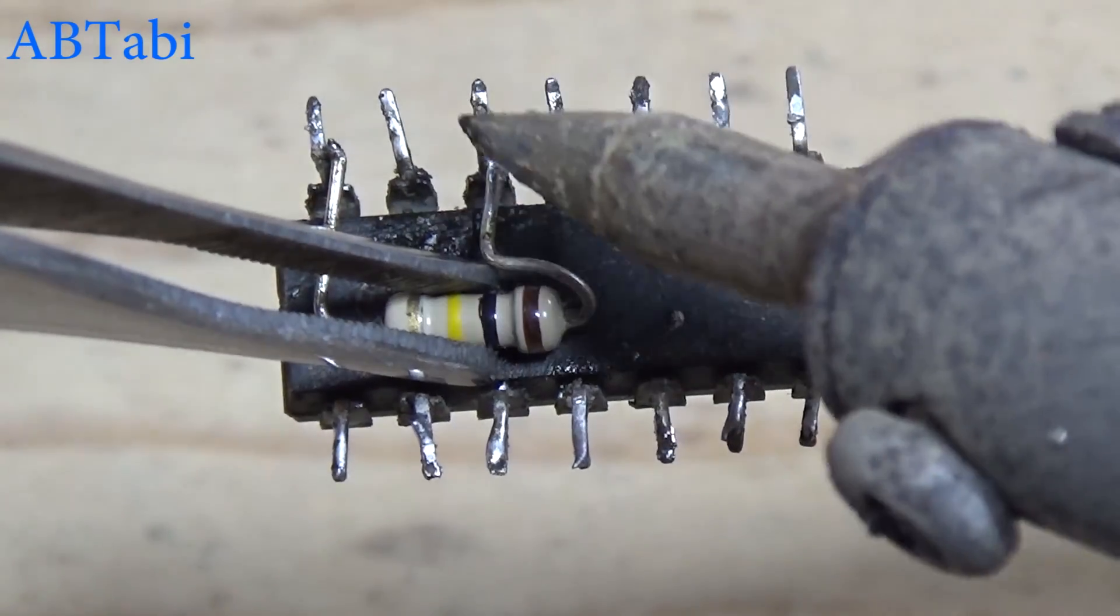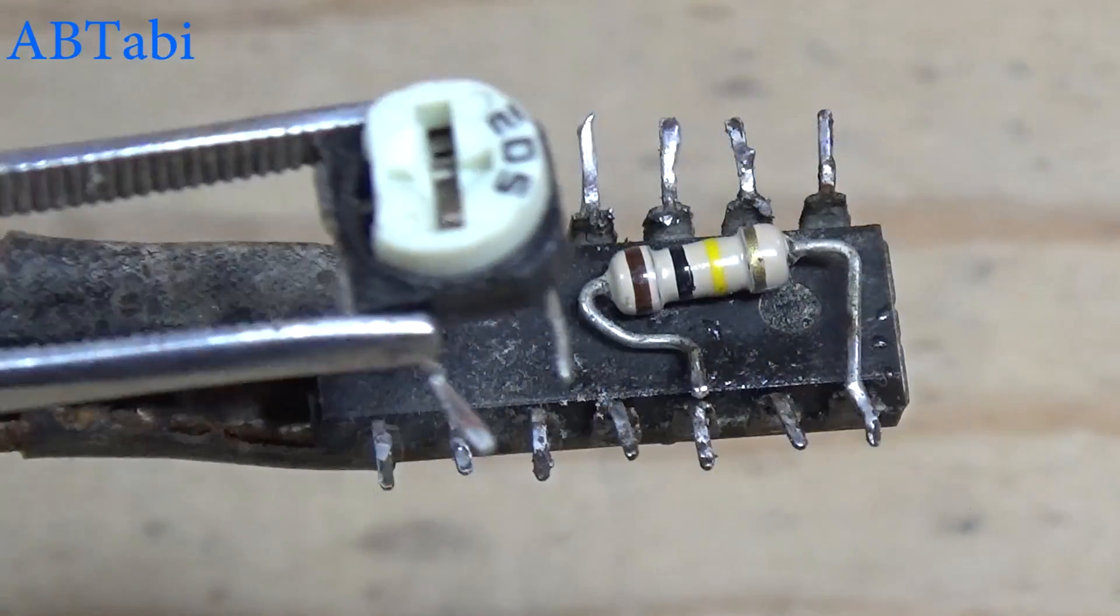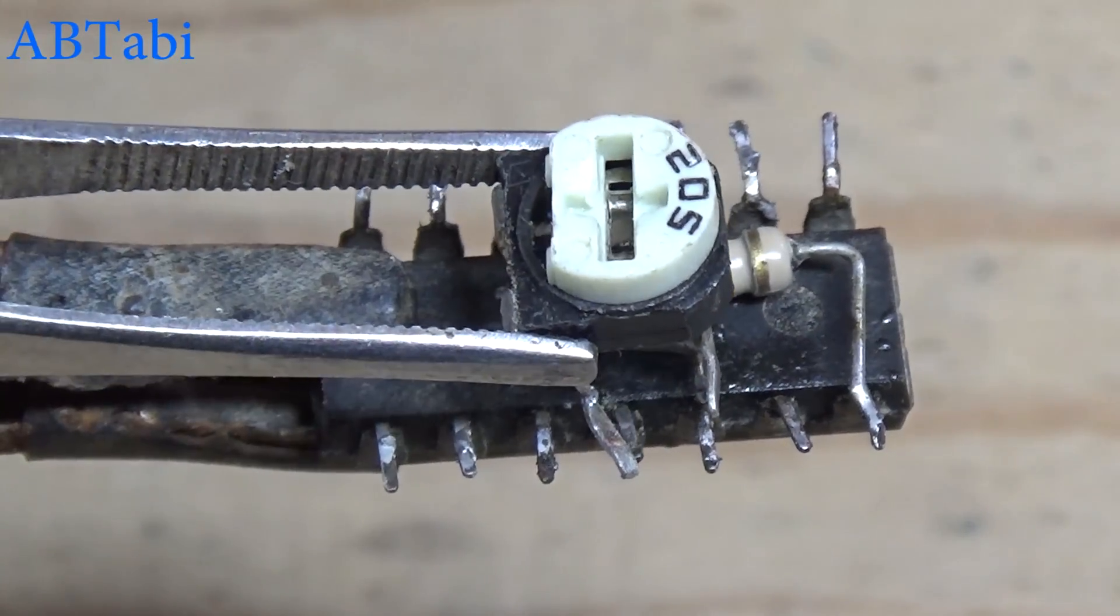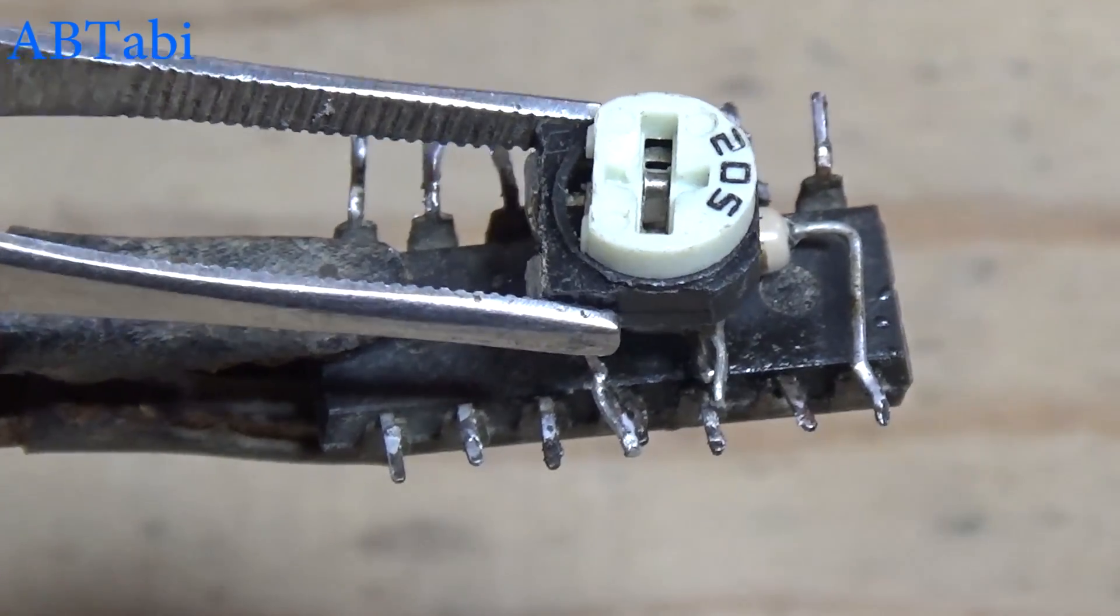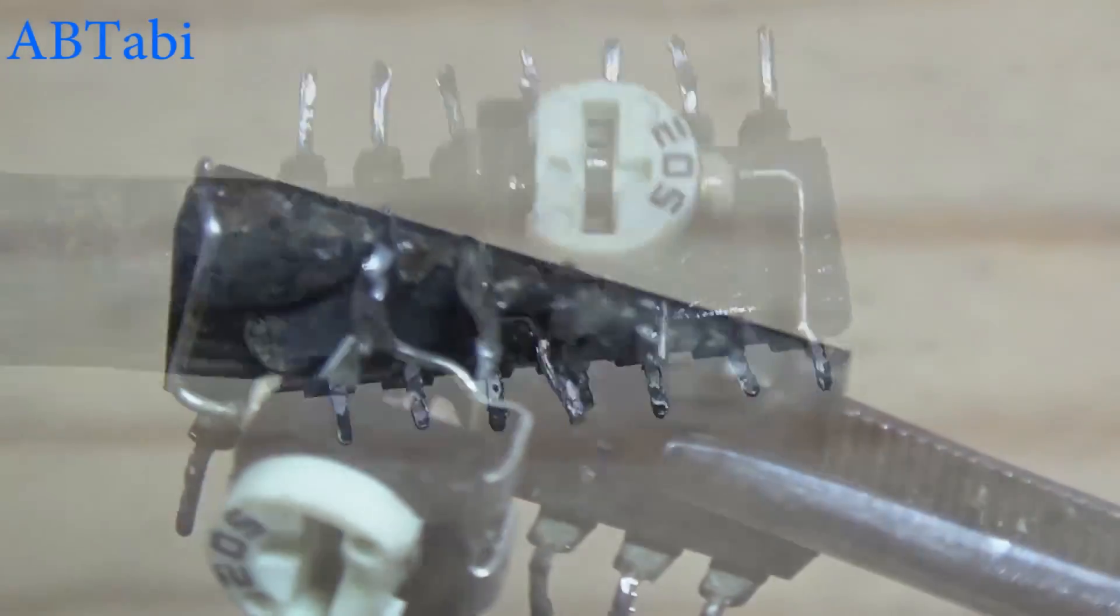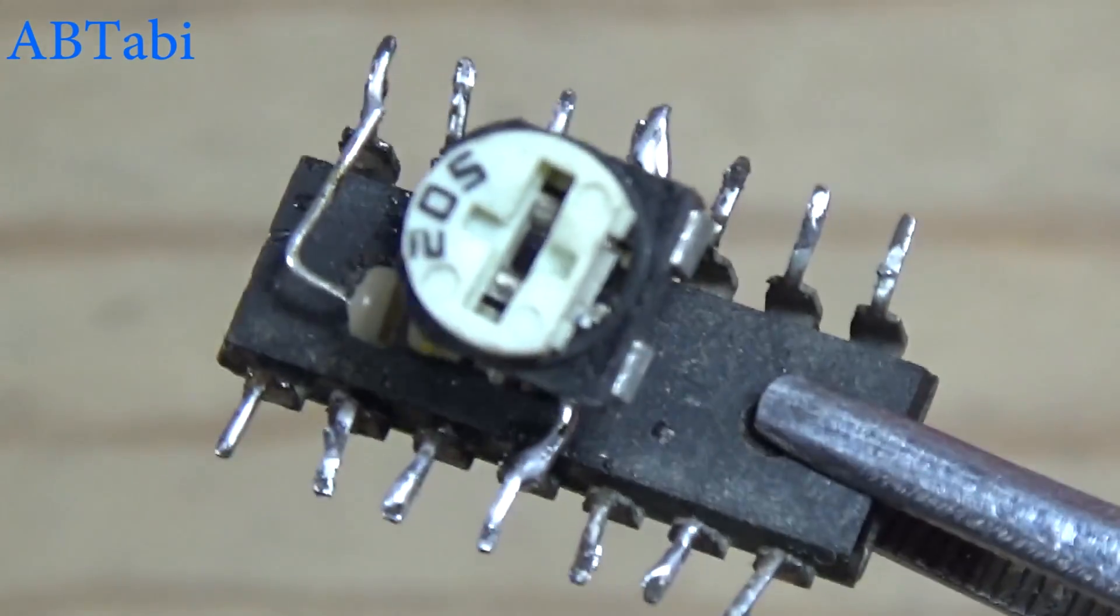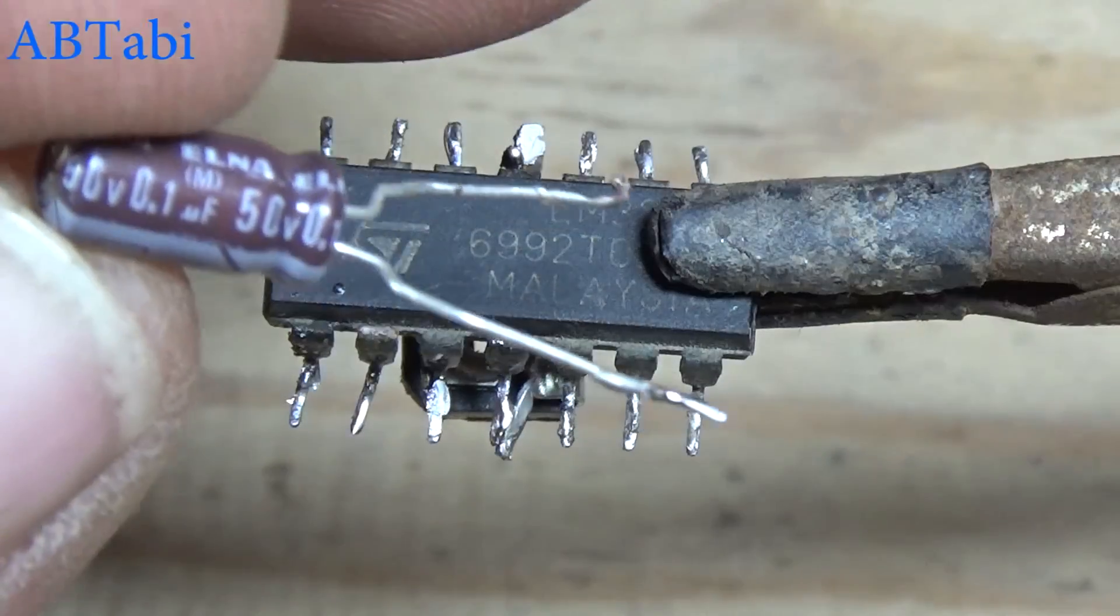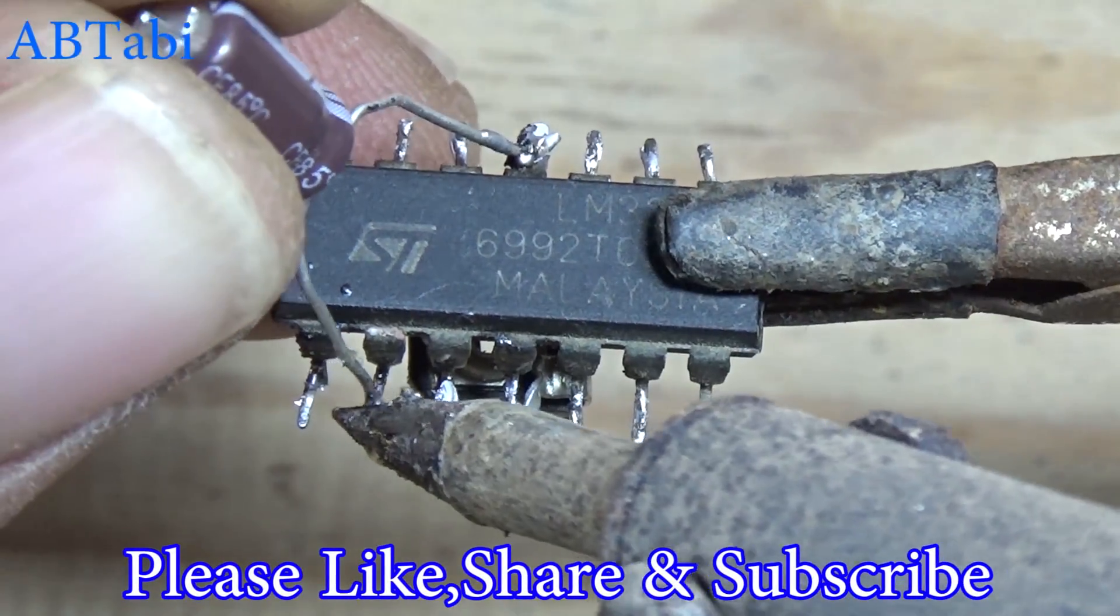100K resistor connects with IC pin 1 and 3. 2 million ohms variable resistor connects with IC pin 3, 4, and 11. 0.1UF capacitor connects with IC pin 2 and 11.